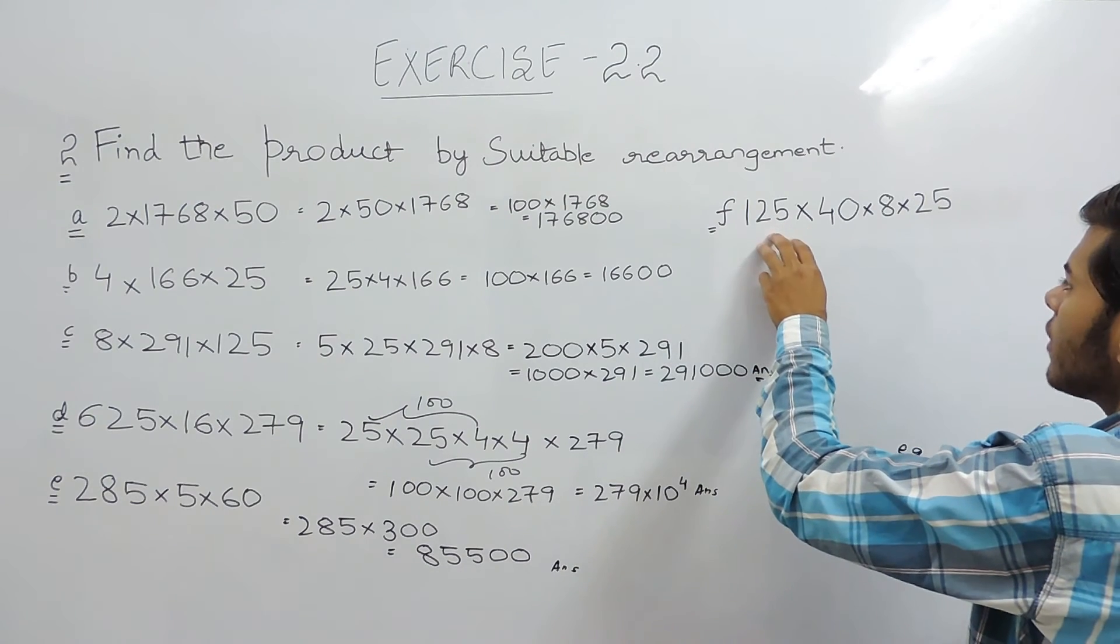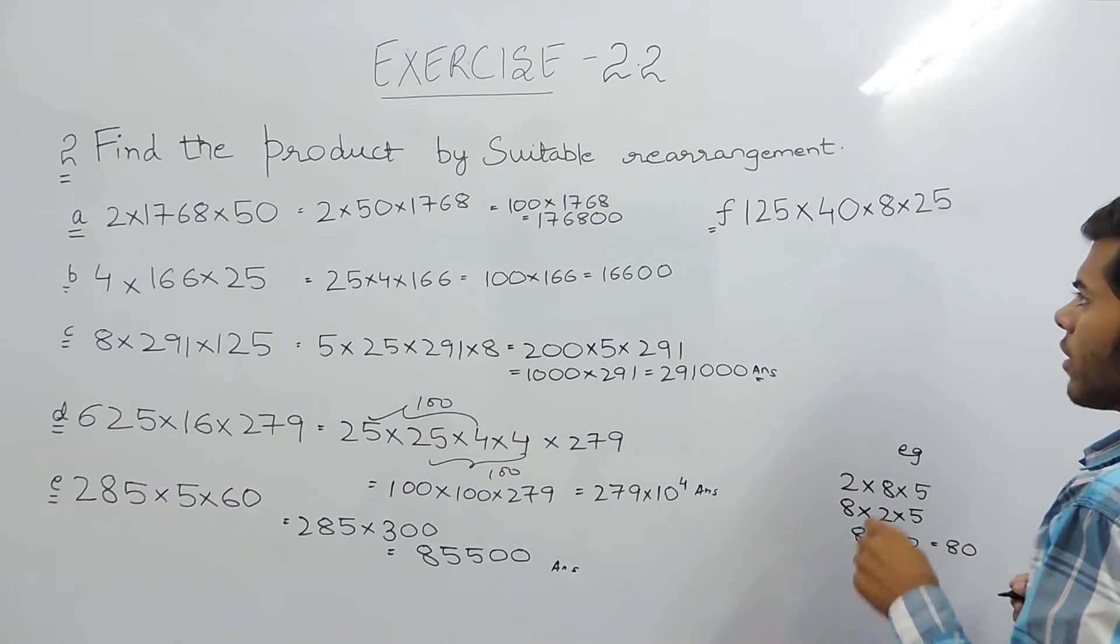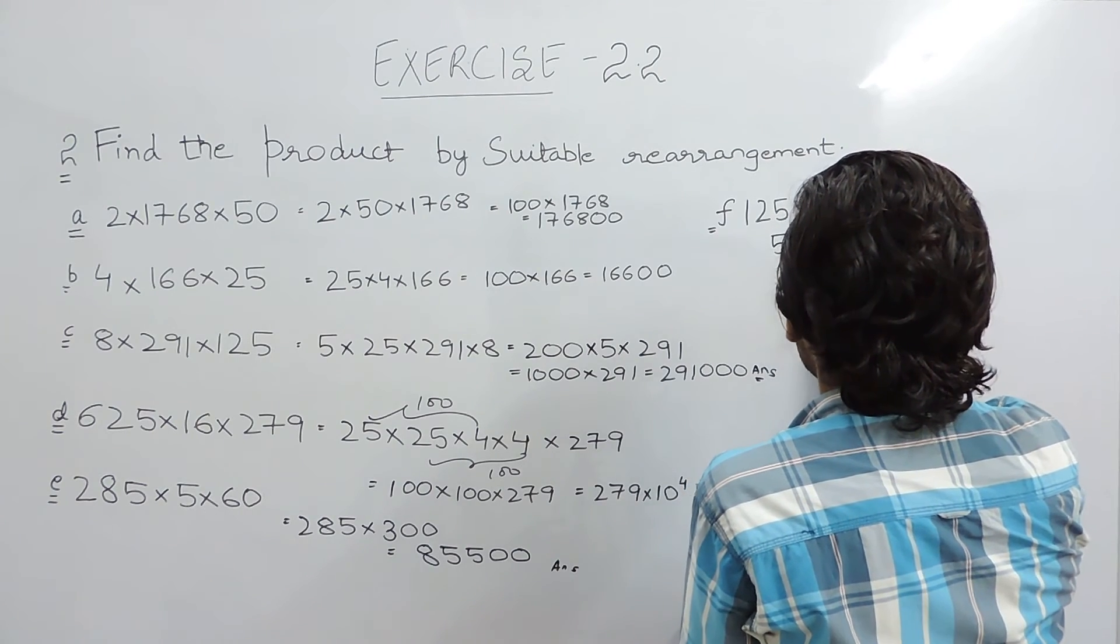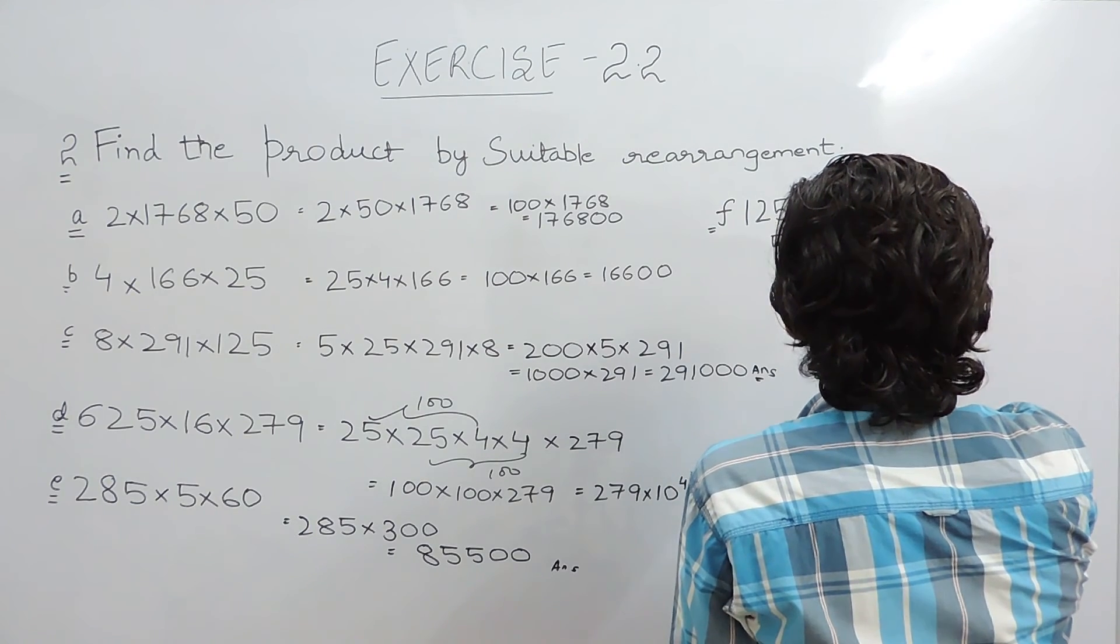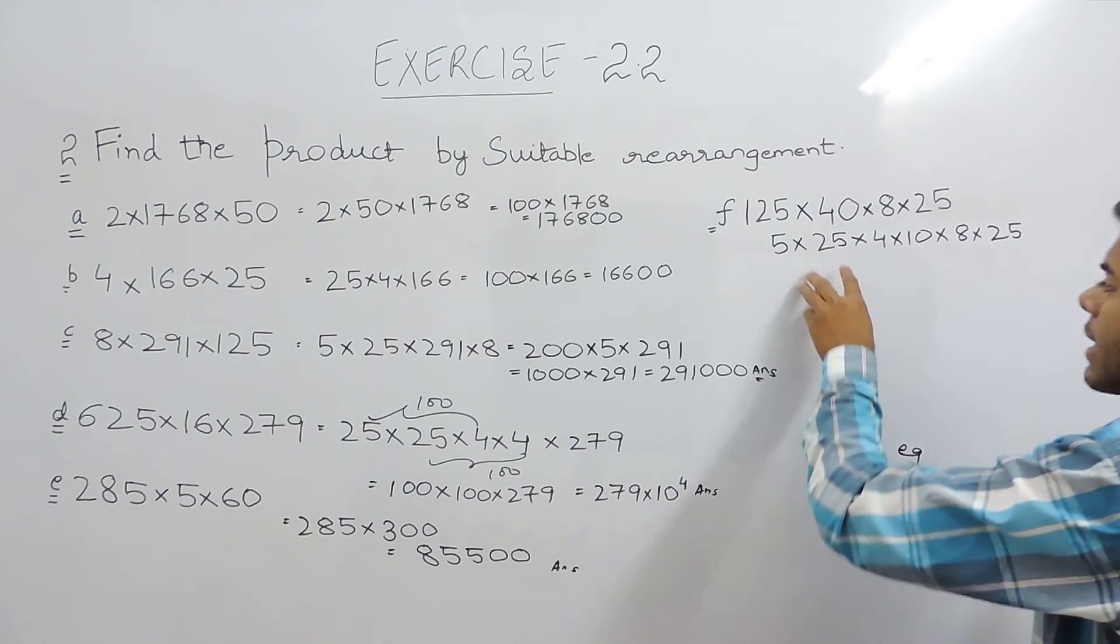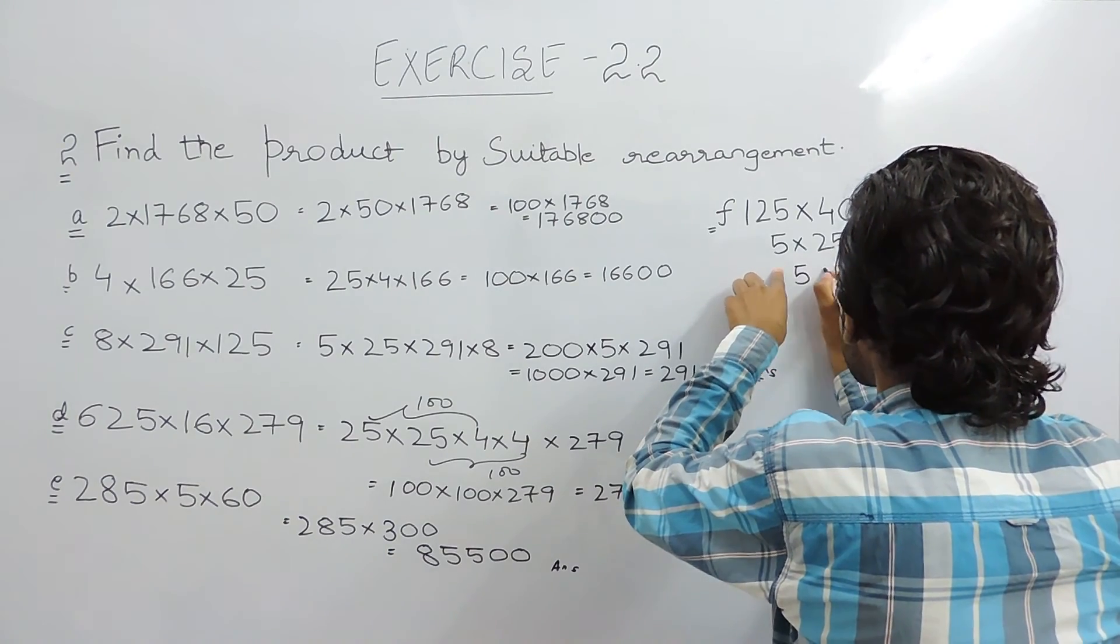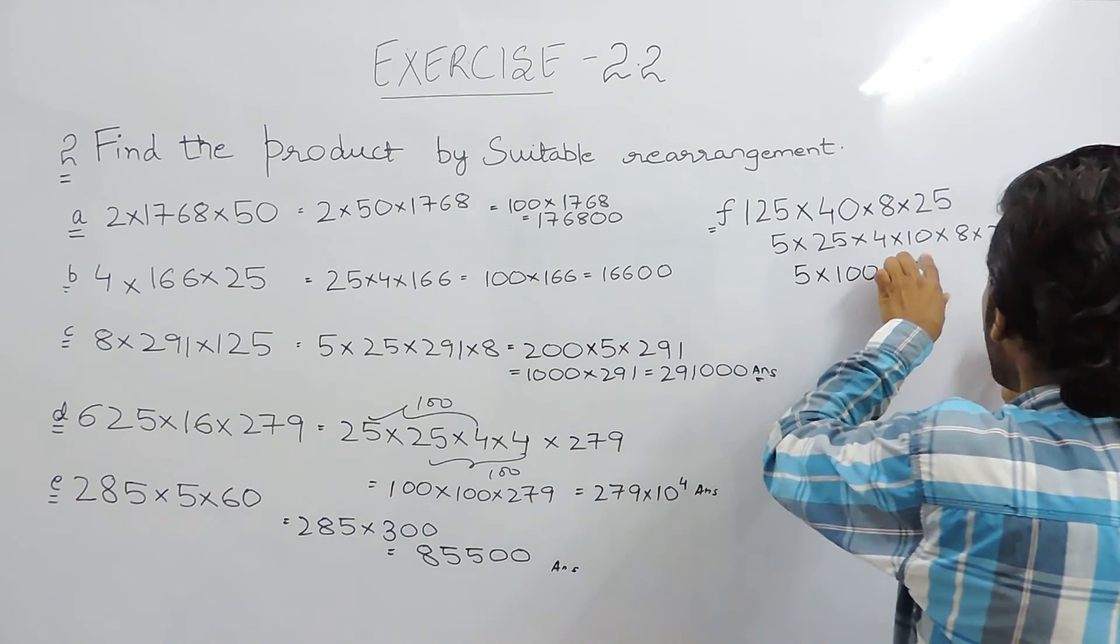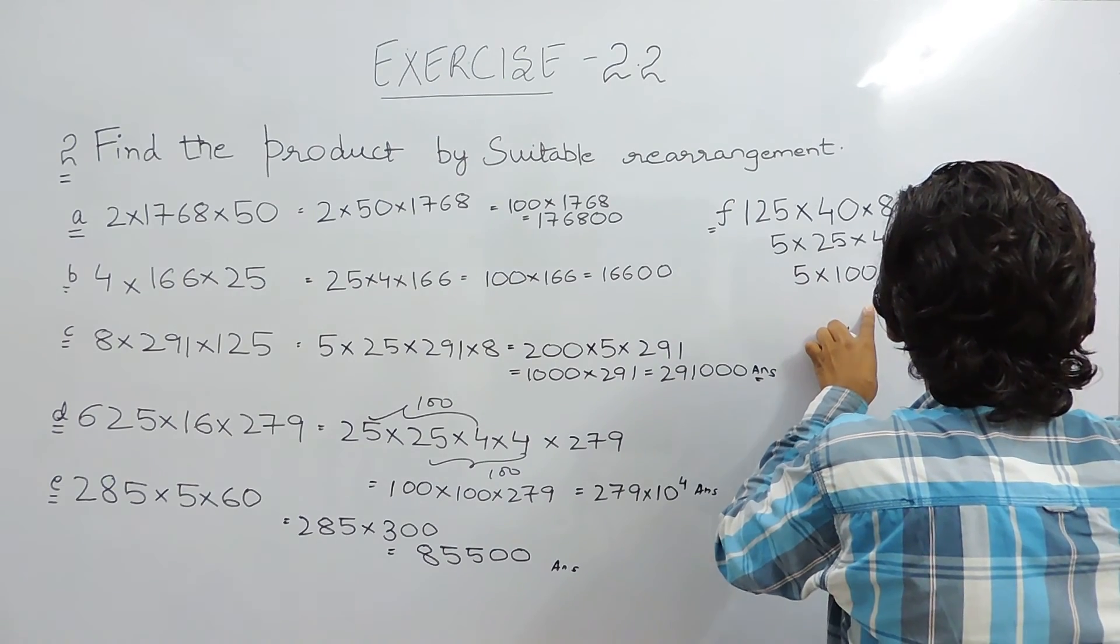In this part it is 125 multiplied by 40 multiplied by 8 multiplied by 25. To make it easy we should write it in the multiple of 5 means 5 into 25 into 4 into 10 into 8 into 25. This will make our calculation easy. So first of all we will do is keep it as it is, 25 four's are 100 multiplied by 10 gives us 1000 multiplied by 8 multiplied by 25.